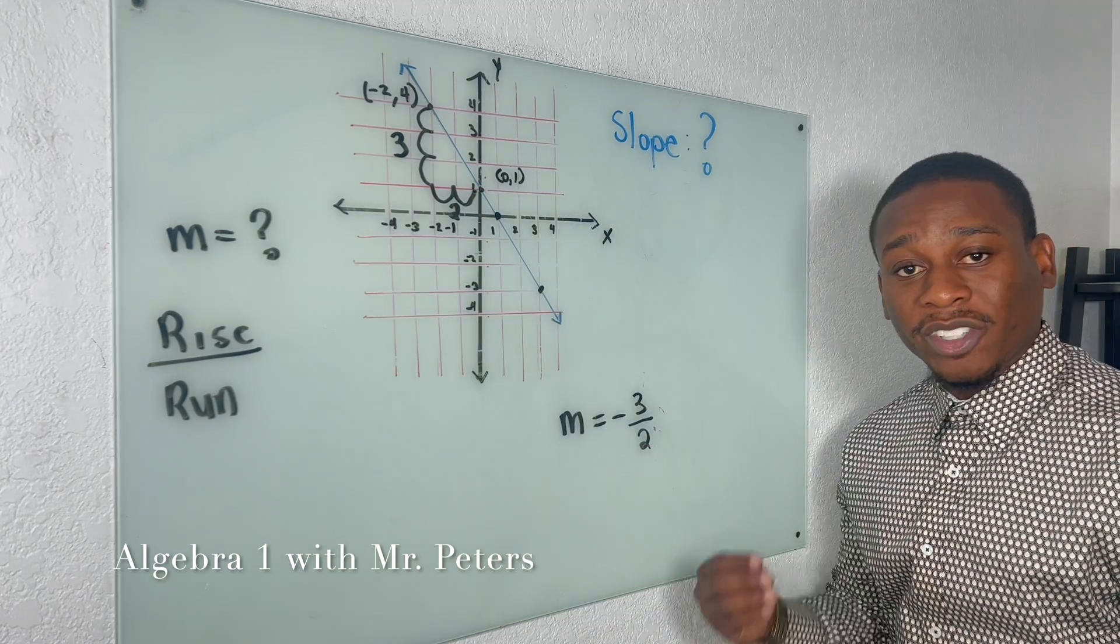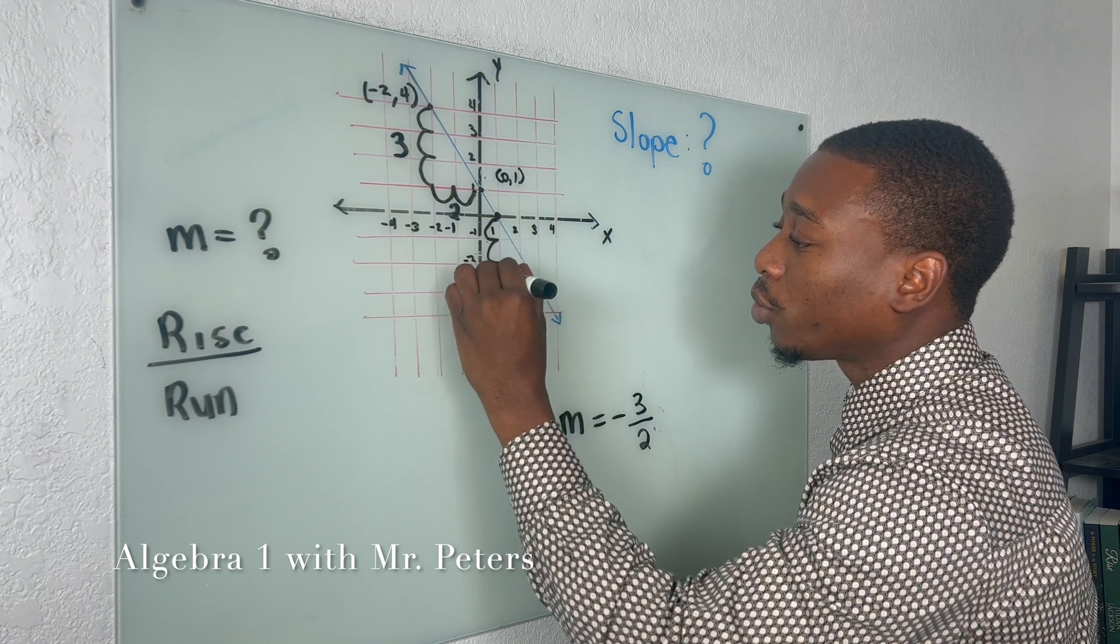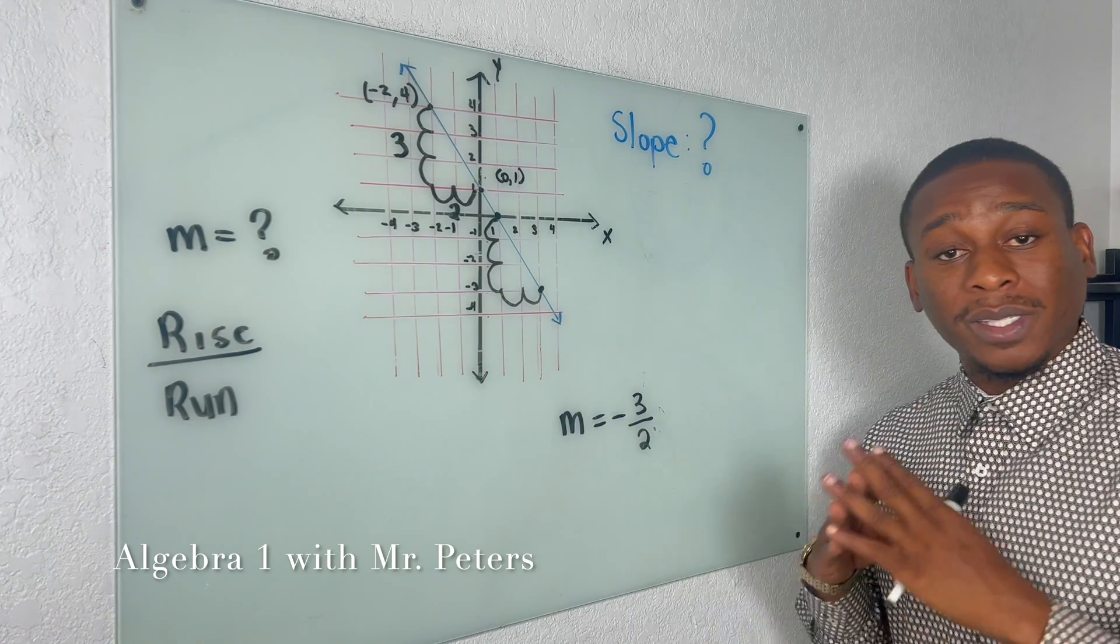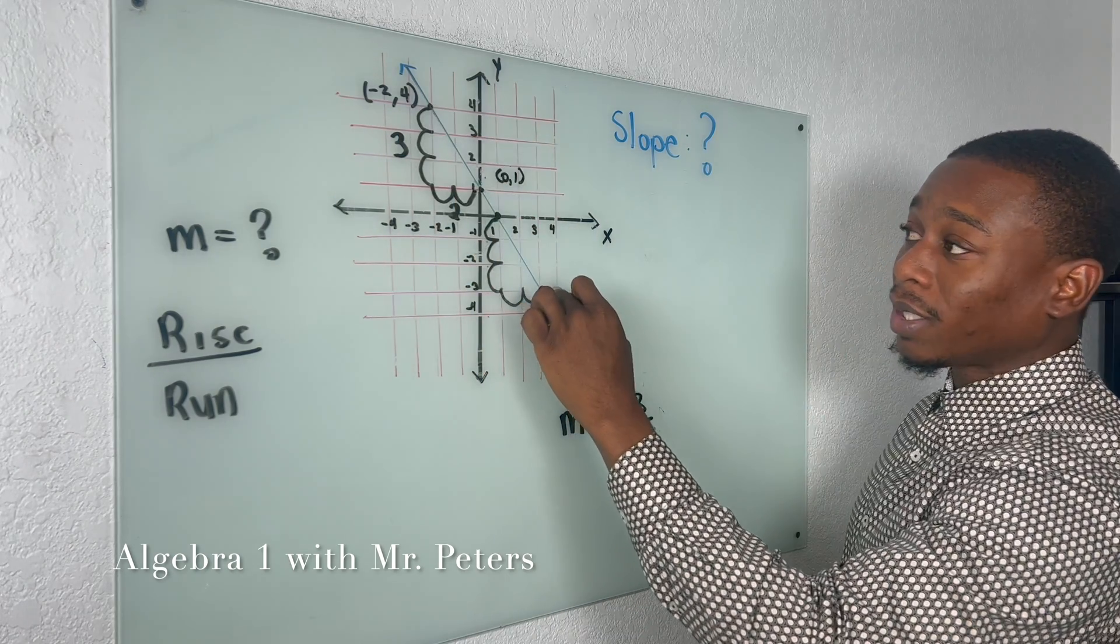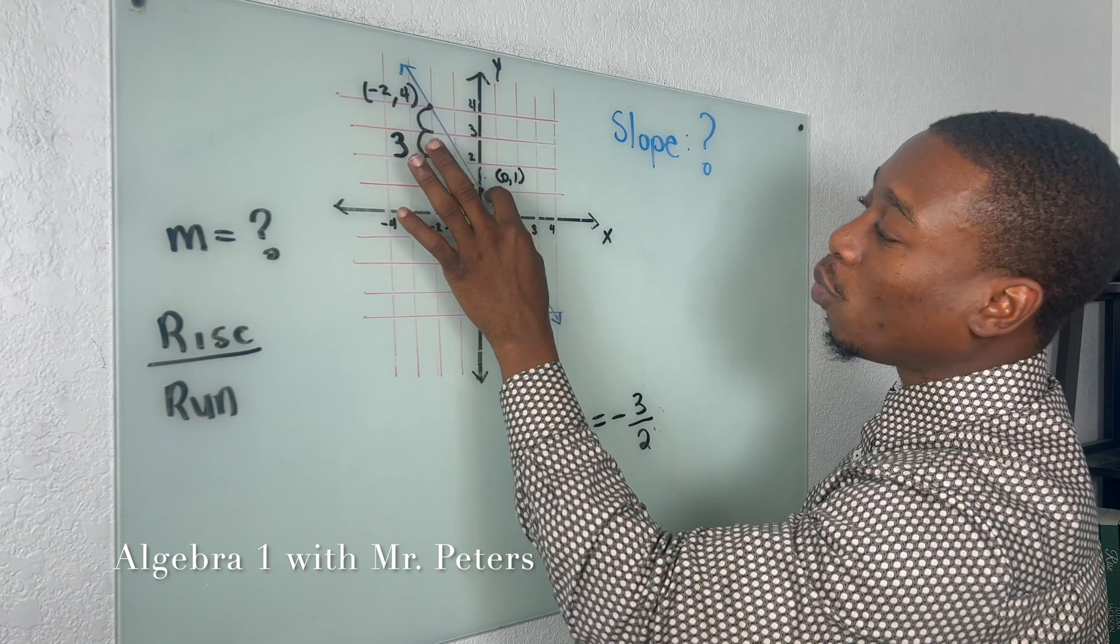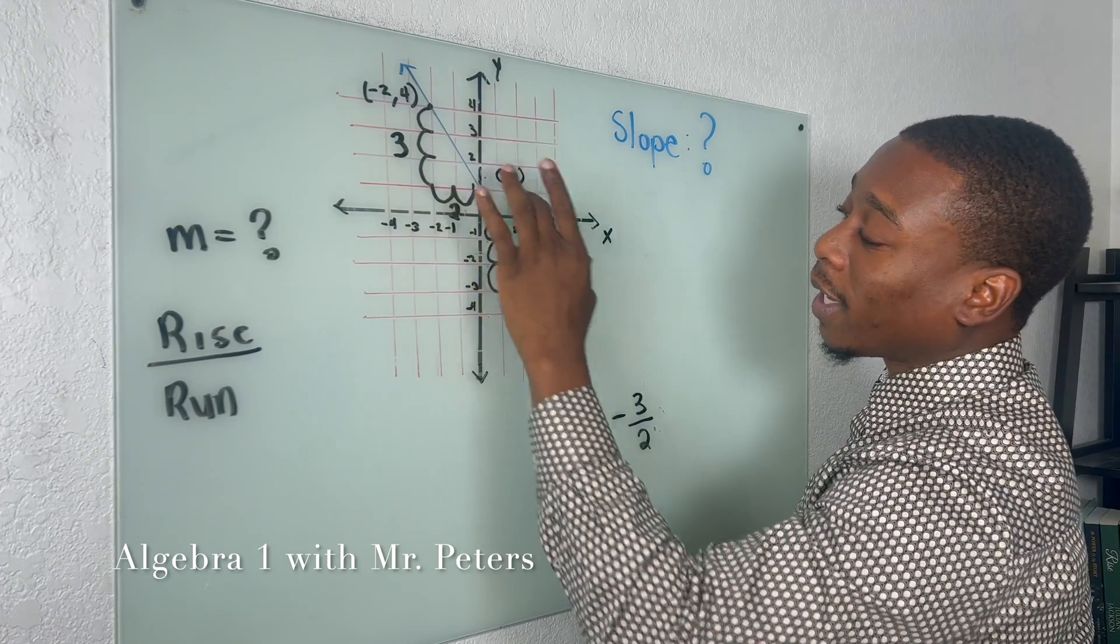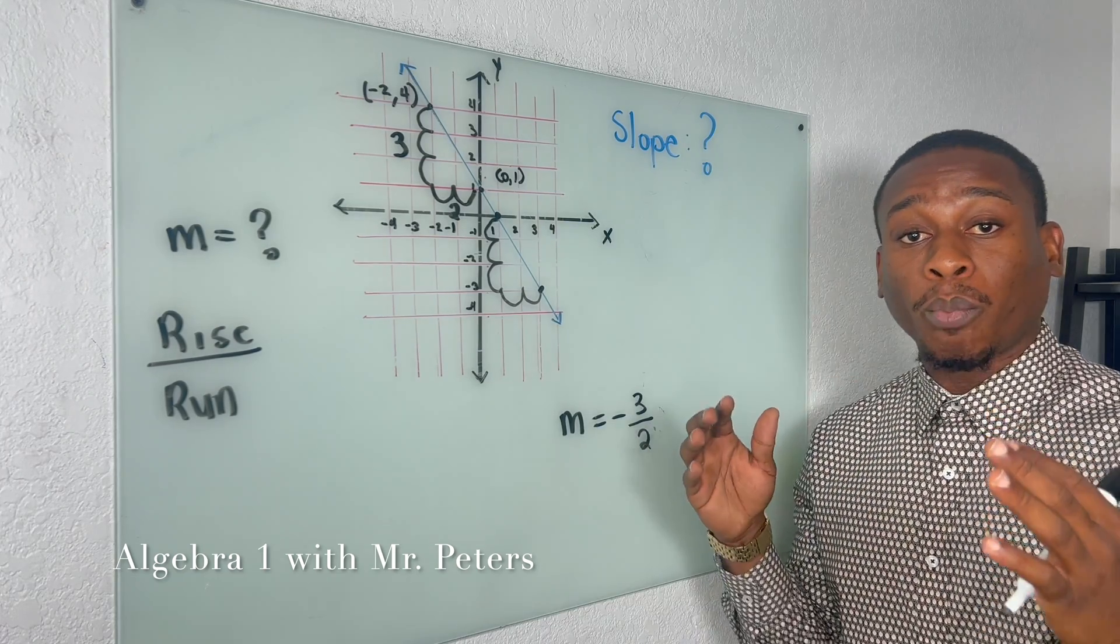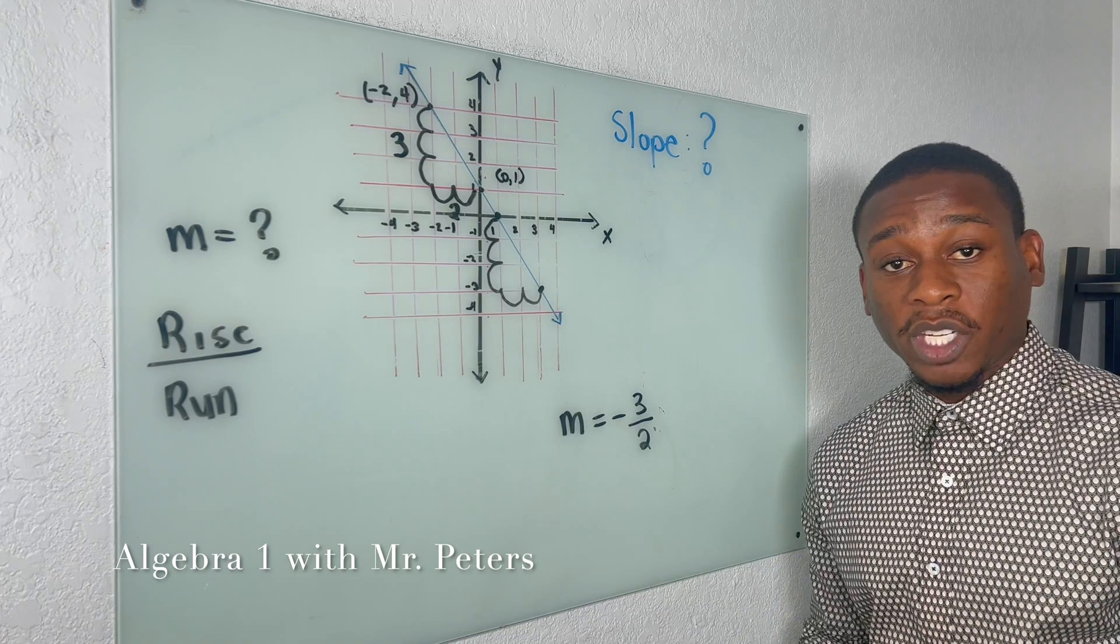But let's say we didn't pick those two points, let's say we picked these two points. What we have to understand is slope is the same no matter what. So I go down one, two, three, go over one, two. So what I notice is the slope is the same throughout the whole line. It doesn't matter if I go from the first point to the last point, the two middle points, or the second and the last point, the slope is going to be the same throughout the entire problem.